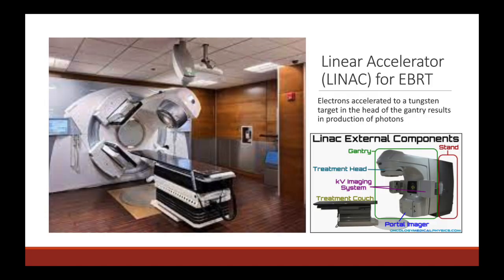External beam radiation is delivered using a machine called a linear accelerator, abbreviated LINAC. A linear accelerator accelerates electrons to a tungsten target, resulting in the production of photons in what is known as the head of the gantry. The head of the gantry is then angled around the patient in various ways, and these photon treatments are delivered. The photons — also known as x-rays — come into the patient's body from different angles, delivering low doses throughout the body, but the area where they all overlap is usually the target area.